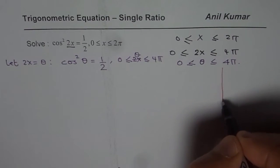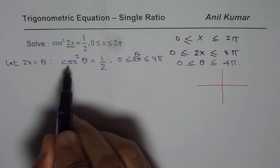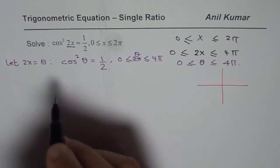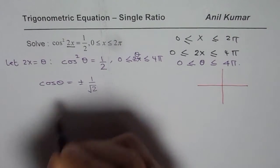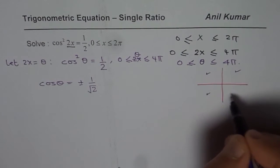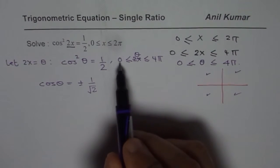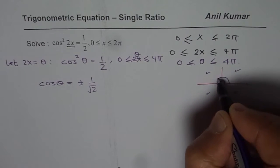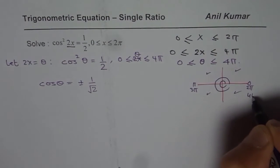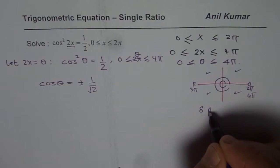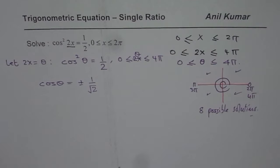Now let us begin with our first step, and that is we want to find the reference angle. So we have cos²θ = 1/2. That means cosθ = ±1/√2. Plus minus means all four quadrants. So we are looking for a solution in all four quadrants and the domain is 0 to 4π. That means two circles. So we are looking for eight possible solutions.